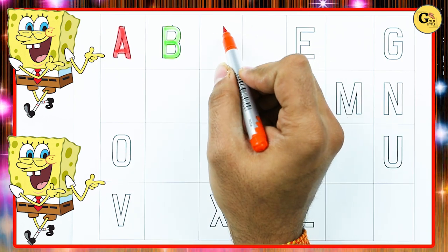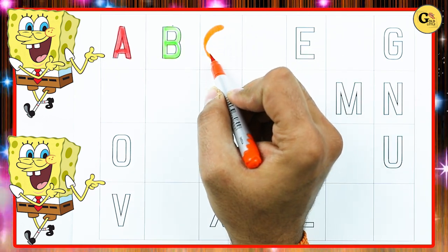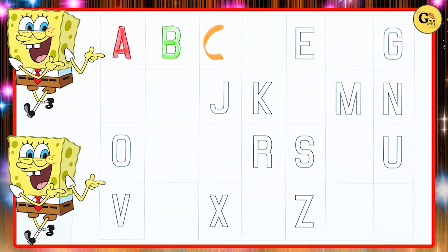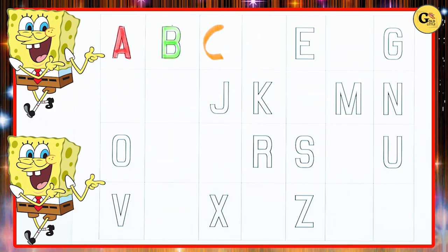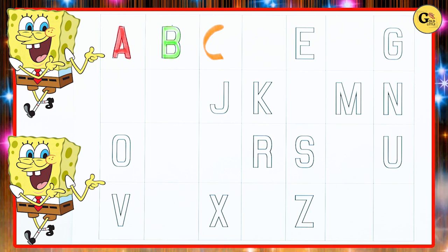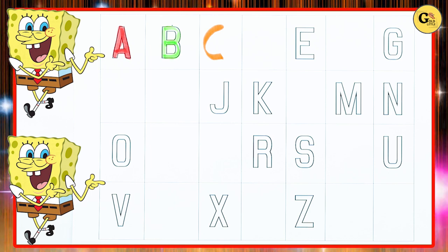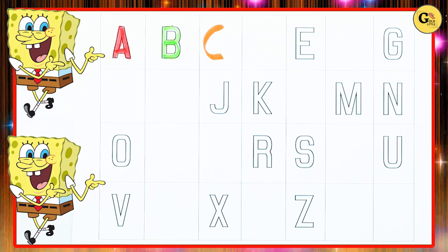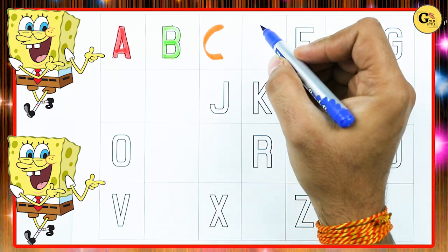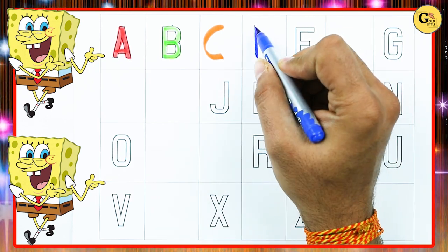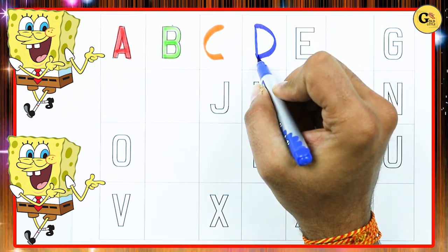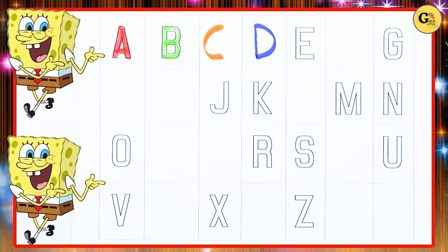C. What's next? C with orange color. C for cat. What next? Tell me. Yes, right. D. D for dog with blue color.